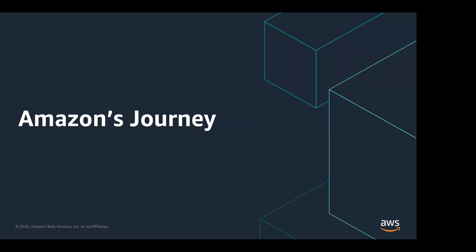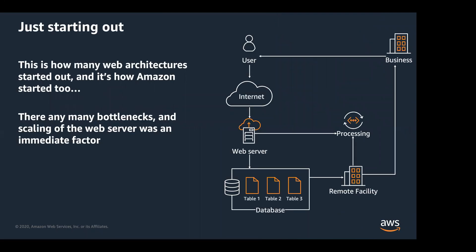In terms of Amazon's journey, this is how things looked circa 1998. Very basic infrastructure - web tier, databases, processing, and things going to remote facilities to send off books. If you remember Amazon early on, we were a bookseller. This architecture had very basic design with a lot of different bottlenecks, and if you look carefully you'll notice a lot of problems with scaling. In order to scale, you could add more web servers, but then your bottleneck becomes the databases.